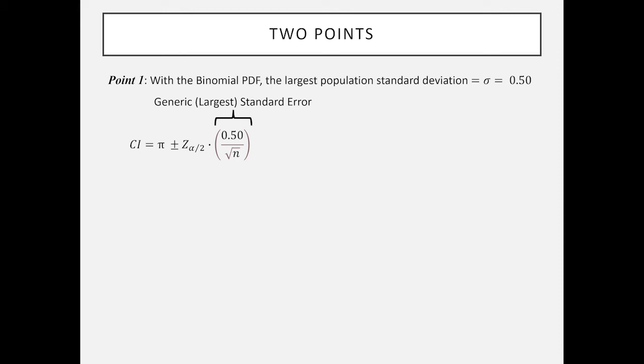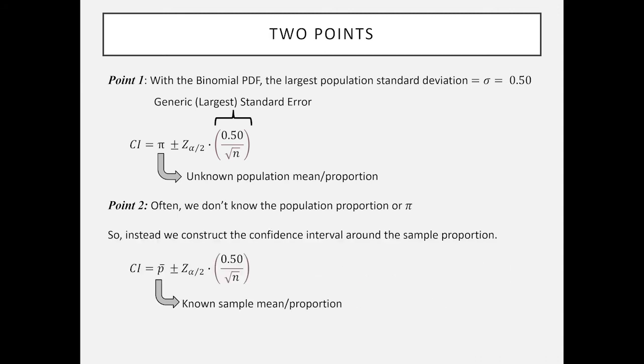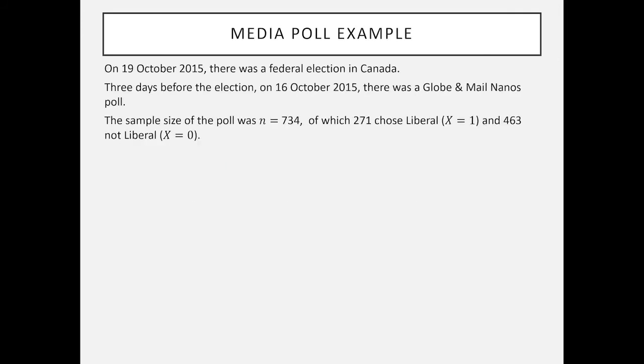The second thing is we frequently don't know the population proportion. In the previous example we knew it because Statistics Canada provides the data, but in many circumstances we don't know it. In which case what we will do is rather than use the unknown population mean or proportion, we'll simply use the known sample mean or proportion that is available from the sample that we've created. We can now create a confidence interval not around the unknown population mean but rather around the known sample mean. This is the final version of the confidence interval that we would normally use as illustrated here.